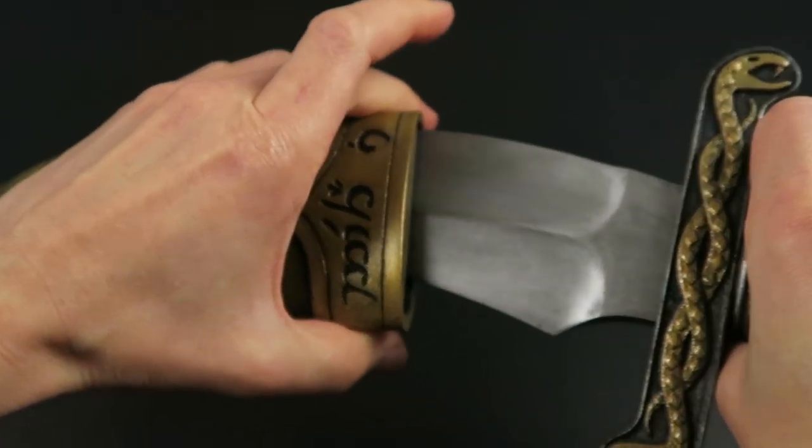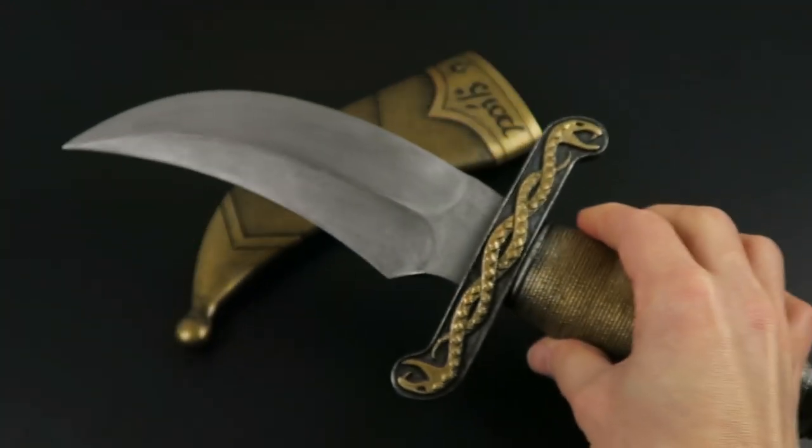There we have it. That is my take on the ruby hilted dagger from the Wheel of Time.